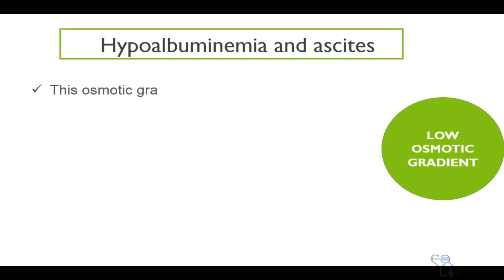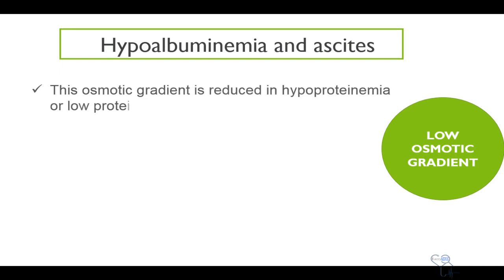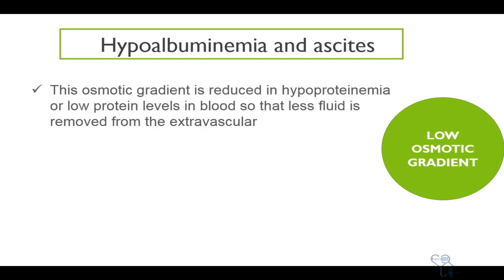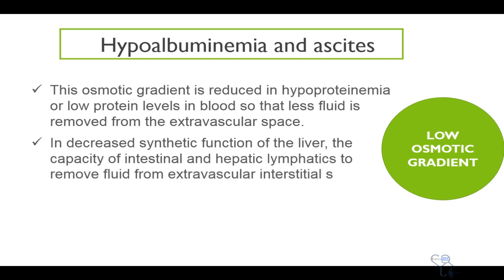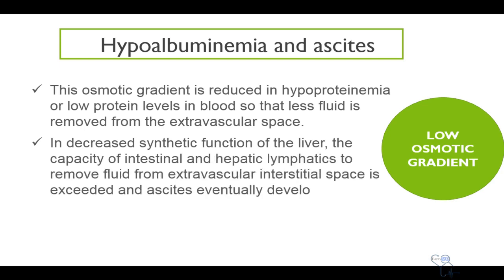This osmotic gradient is reduced in hypoalbuminemia — also called hypoproteinemia, or low protein levels in blood — so that less fluid is removed from the extravascular space into the intravascular space. In decreased synthetic function of the liver, the capacity of intestinal and hepatic lymphatics to remove fluid from the extravascular space into the intravascular space is exceeded, and ascites eventually develops.